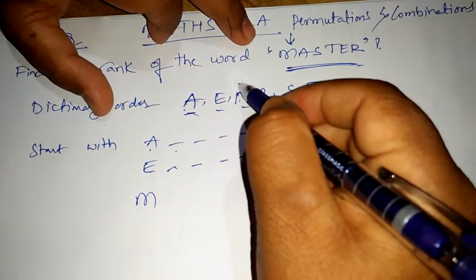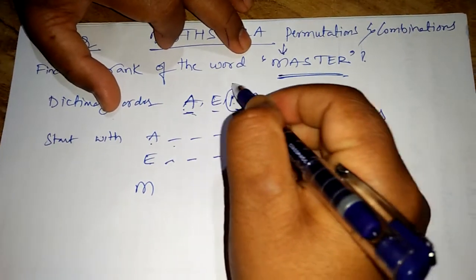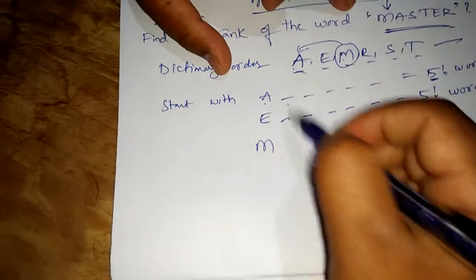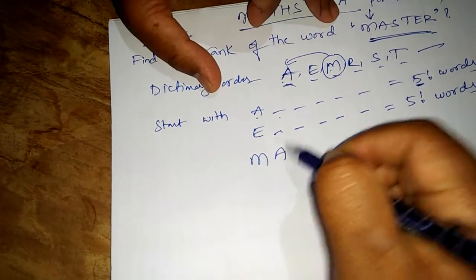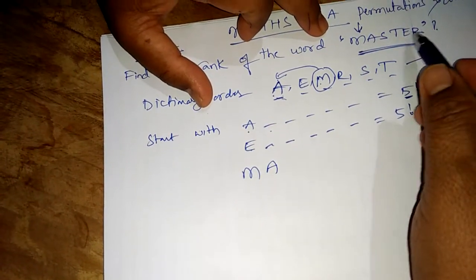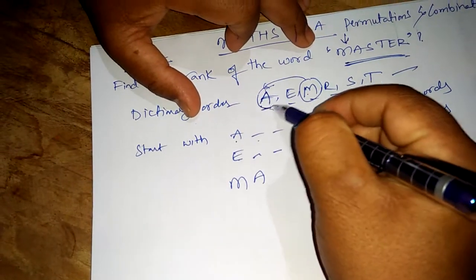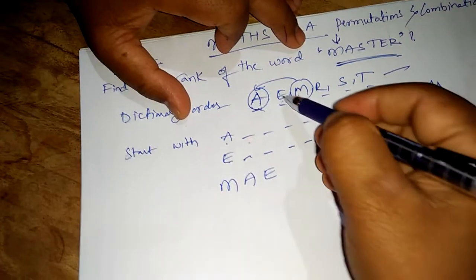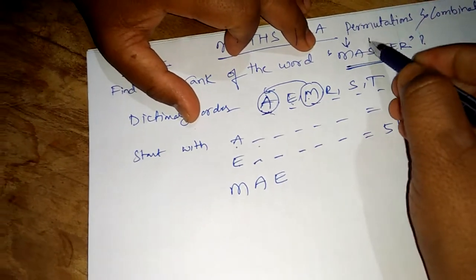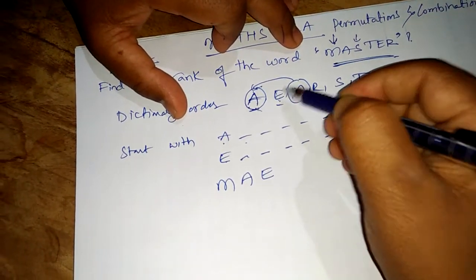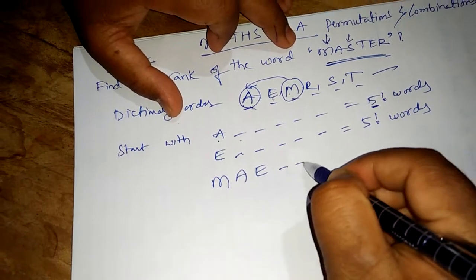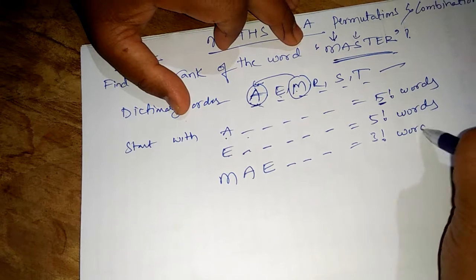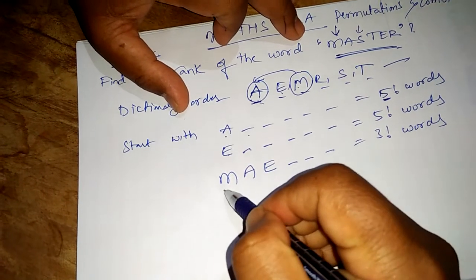M matches our word, so we keep it and go back to the dictionary order for the second letter. The next letter after M is A — A matches our word MASTER, so we keep it. Moving to the third letter: E does not match our word. We leave three gaps, giving 3! words starting with MAE.